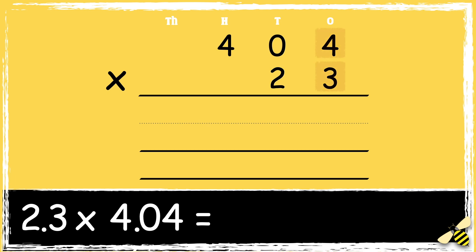So we start with 3 times 4, which is 12. We carry the 1 below in the tens column, as it represents 110. Then we multiply 3 by 0 tens. 3 times 0 is 0, but we need to add the 110 below, so 0 add 1 is 1. Next, we need to multiply 3 by 4 hundreds. 3 times 4 is 12.